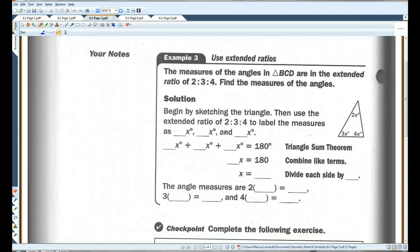The measures of the angles in triangle BCD are in the extended ratio of 2, 3, 4. Find the measures of the angles. So basically, whatever these angles are, we don't know what they are, but we know that if you were to put them in ratio form and simplify, you would get 2, 3, 4. So we can represent them by 2x, 3x, and 4x.